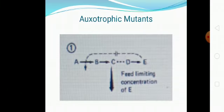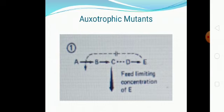Let us see examples for auxotrophic mutants — in the next PPT we will see resistant mutants. In the first example, A is getting converted to B, B to C, C to D, and D to E, where E is the end product. What is an auxotrophic mutant? E is not produced — when the end product is not produced it is called an auxotrophic mutant. Below C there is a dark arrow going vertically down showing that C is the product of our interest — we want to produce C commercially.